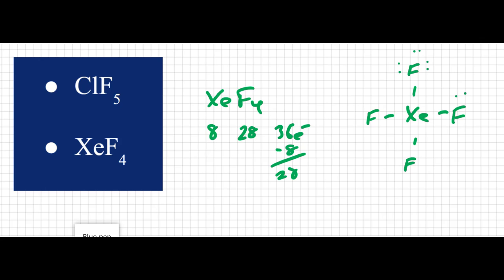I can put six on each of the fluorines, and that's 24. So I'll have four electrons left, and the only place I can put them is on the xenon. So once again, six sites on the central atom, this time four bonds and two lone pairs.